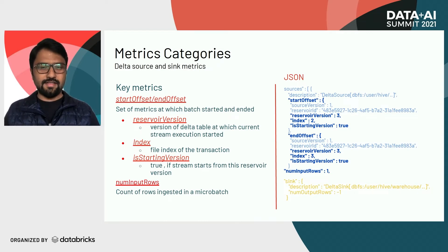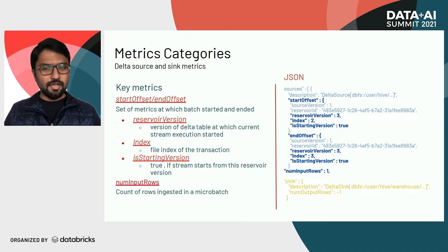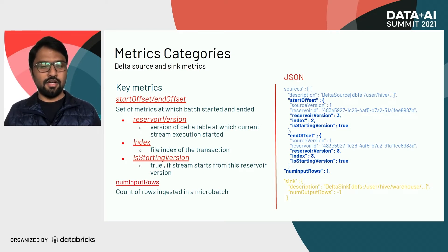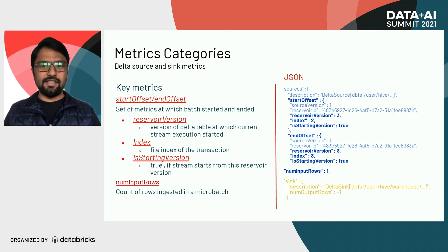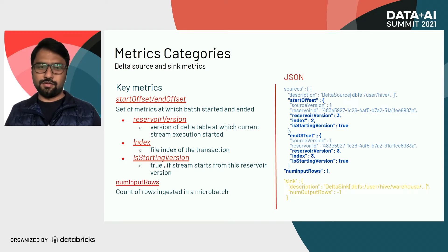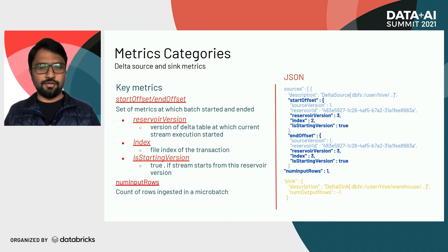Then we have isStartingVersion, which is a Boolean field. It will be set to true if your reservoir version represents the transaction ID of your source Delta table at which this stream was initially started. If you start a stream from a Delta table that already had a lot of data, isStartingVersion will be set to true for a long time. If you start from an empty Delta table, isStartingVersion will advance to false quickly. Finally, number of input rows represents how many rows were ingested in that particular micro batch.